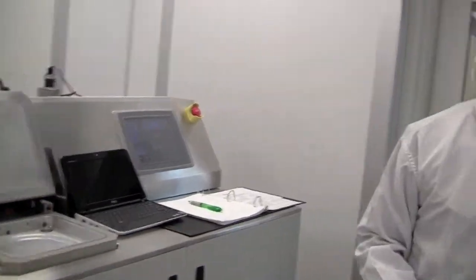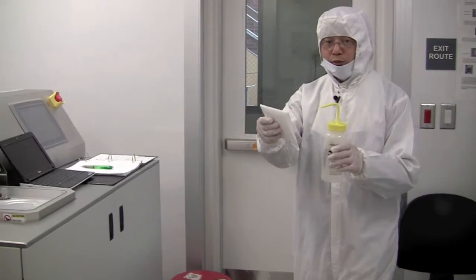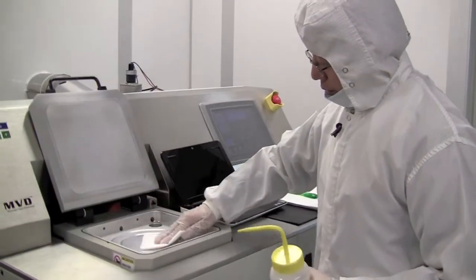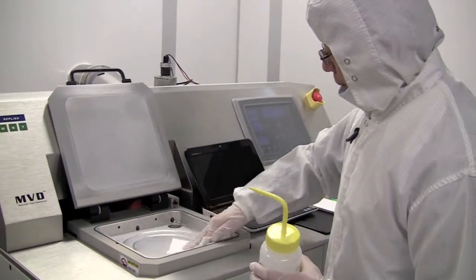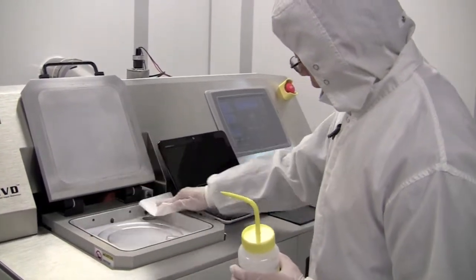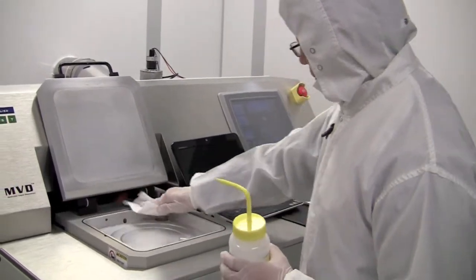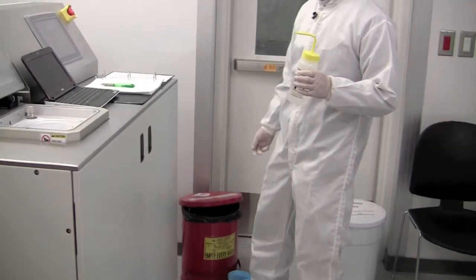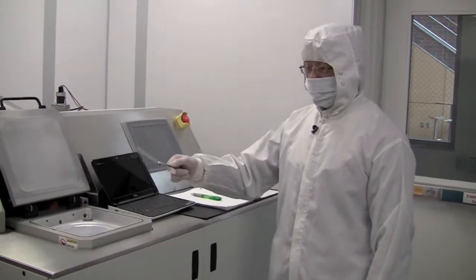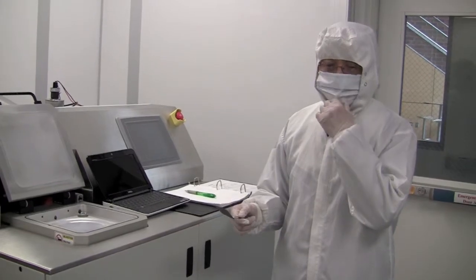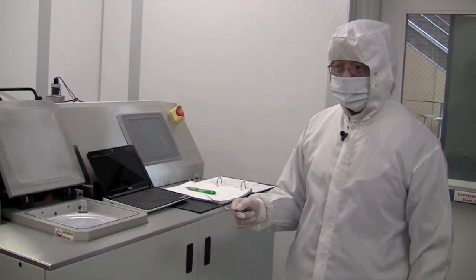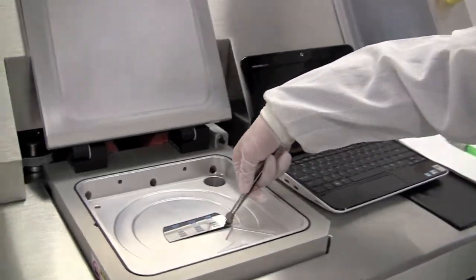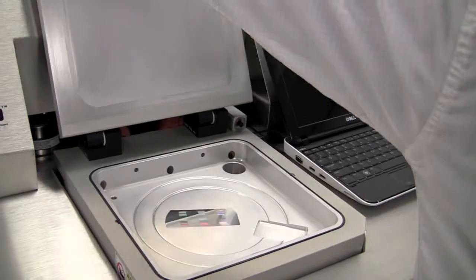Before we do that, we need to get a piece of clean room wipe and spray a little bit isopropyl alcohol. Clean up the chamber and the edge of the chamber. We put this waste into the flammable container. So before you load the sample, make sure you put on the mask to avoid contaminating the sample. So you put the sample into the center of the chamber and then close the lid.